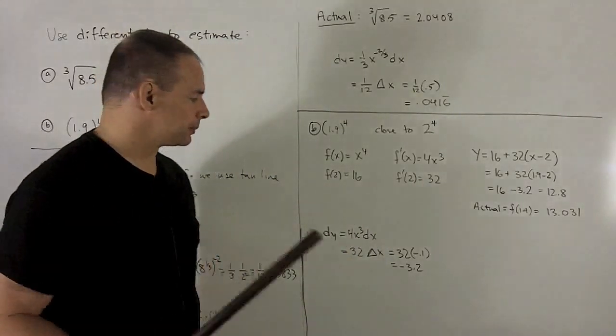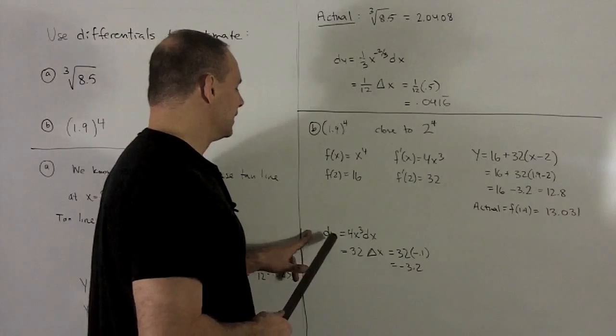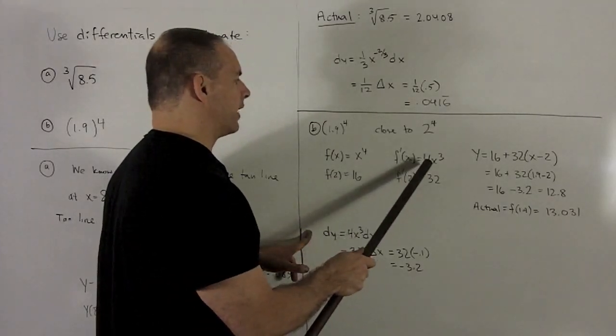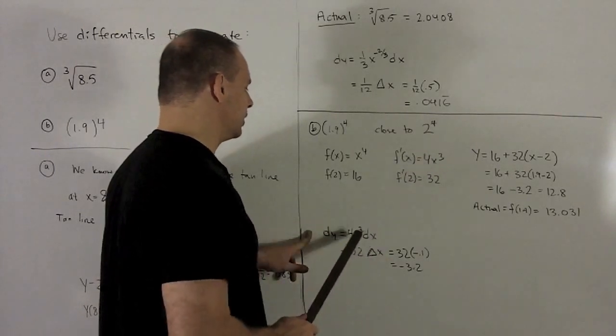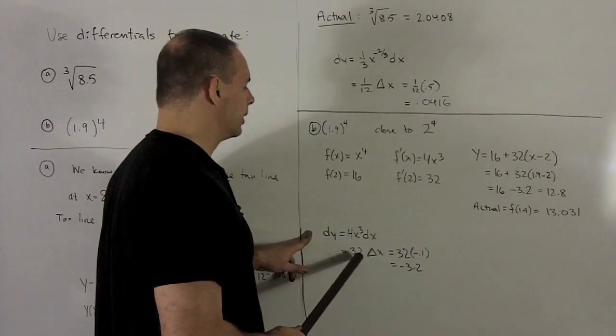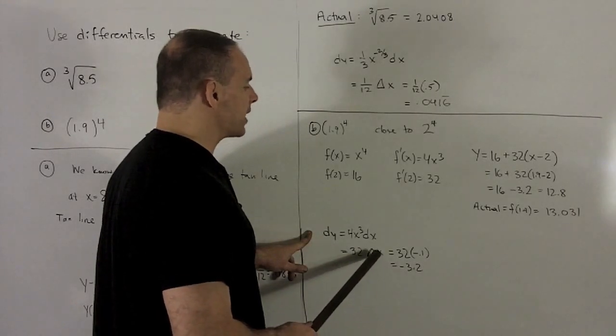Where does the differential come in? We calculate it. dy equals f prime of x dx, so f prime of x is going to be 4x cubed. I put my 2 in there, we get 32 as we already saw, and then that's going to be times delta x.